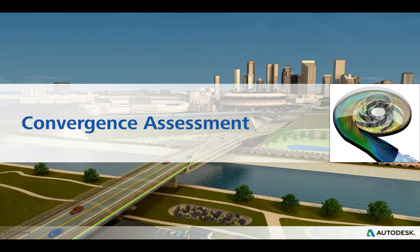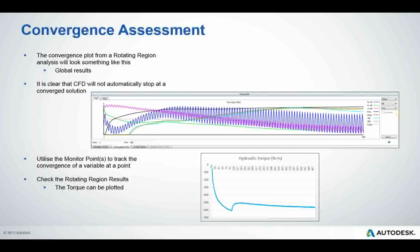Once the model is running, assess convergence to ensure we're moving toward a converged solution. For most analyses CFD automatically stops when converged, but with rotating machinery we're plotting all variables globally over time and most velocity components are cycloidal. Instead, look at the pressure curve — the black line — which is fairly smooth, or use monitor points tracking pressure or flow rate at the outlet. You can also stop the analysis and look at rotating region results to plot torque over time, showing an initial large impulse as the impeller starts moving, then gradually stabilizing.